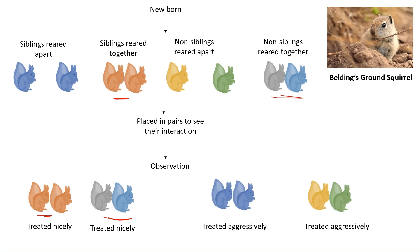Coming to siblings as well as non-siblings those who were reared apart — whether or not they were siblings or non-siblings, if they were reared apart they treated each other aggressively. Those reared together showed associative learning — they learned that they are family members because they remained associated during their childhood. Those reared apart treated each other as strangers.